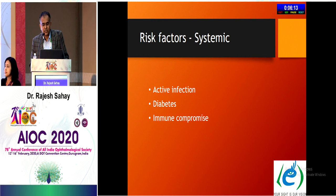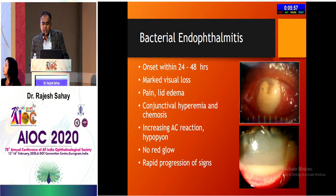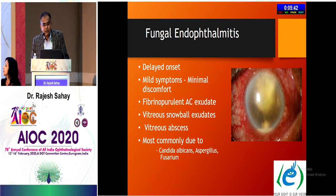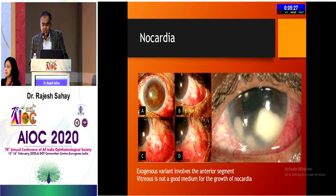If the patient has active infection elsewhere or is diabetic or immunocompromised, utmost aseptic care must be taken. Bacterial endophthalmitis typically starts at 24 to 48 hours with marked visual loss, pain, lid edema, conjunctival hyperemia and chemosis, increasing AC reaction, hypopyon, no red glow, and rapid progression. Fungal endophthalmitis presents with delayed onset, mild symptoms, minimal discomfort, fibrinopurulent AC exudates, vitreous snowball exudates, and is most commonly due to Candida albicans, Aspergillus, or Fusarium.